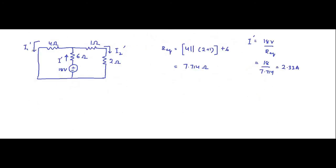We are interested in finding I1 dash. Applying the current division rule again: I1 dash equals I dash multiplied by 1 ohm plus 2 ohm, that is 3 ohm, divided by the total of 3 plus 4, that is 7. So it is 2.33 multiplied by 3 by 7.